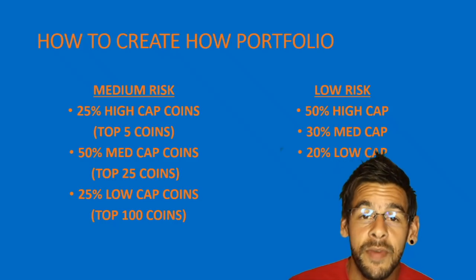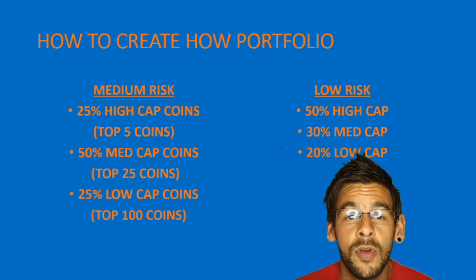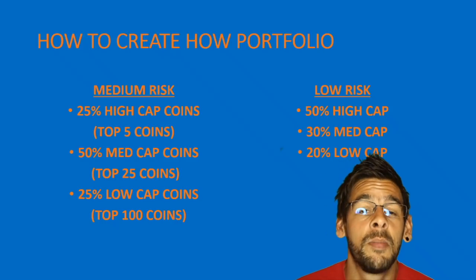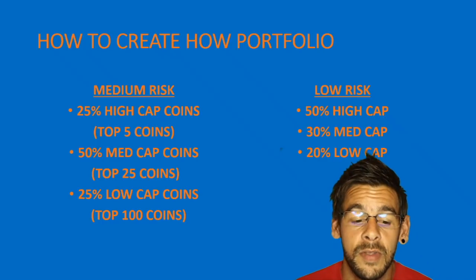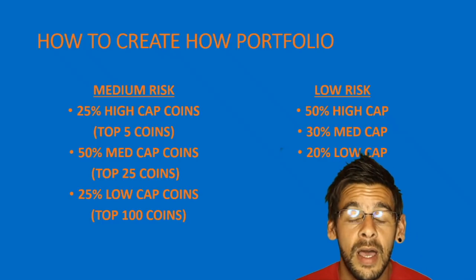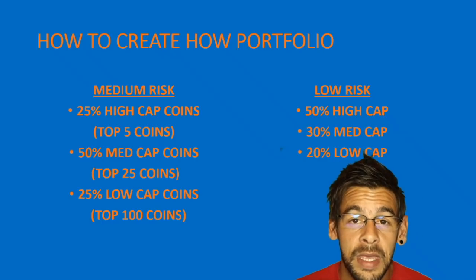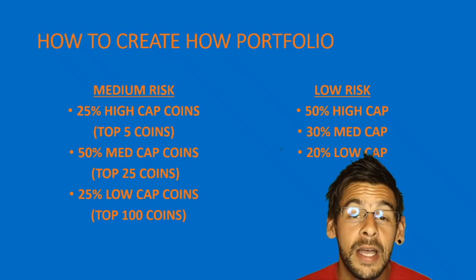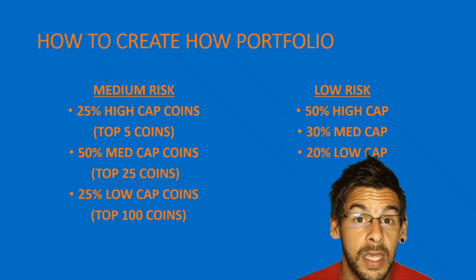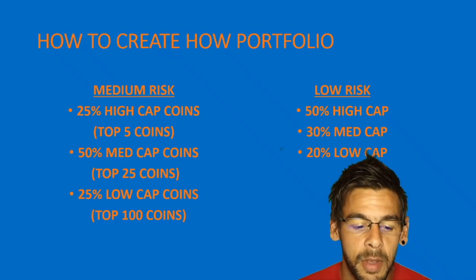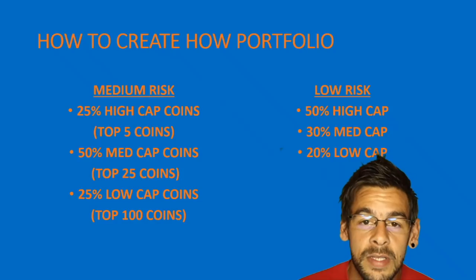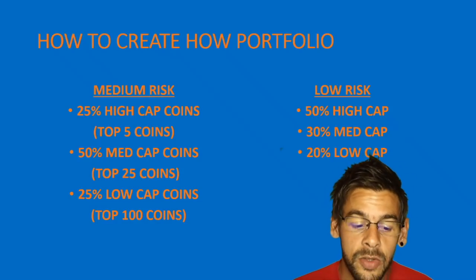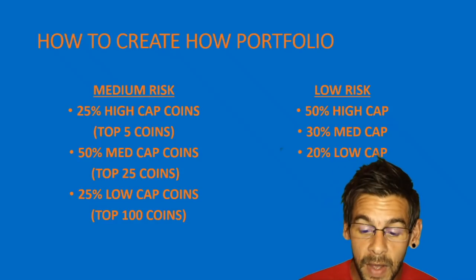These are high cap coins like Bitcoin, Ethereum, Ripple, Bitcoin Cash and EOS. Obviously these will change as time goes on. Then 50% in medium cap coins — your top 25 coins.